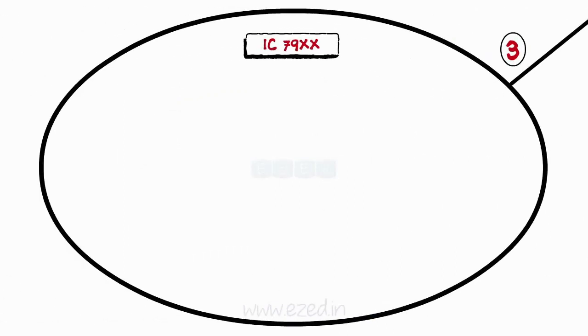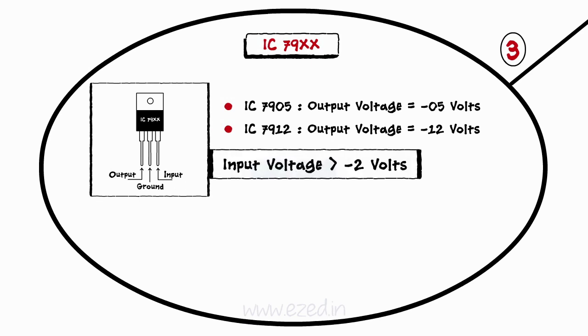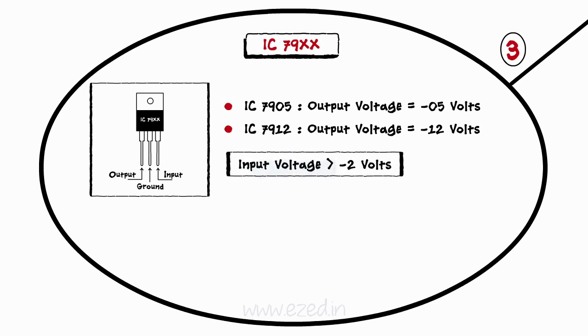IC79xx is a regulator IC which supplies a constant negative voltage. Even here, the last two digits represent the output. But the required condition is that the input voltage should be greater than minus 2 volts, or the input should be greater than output voltage.